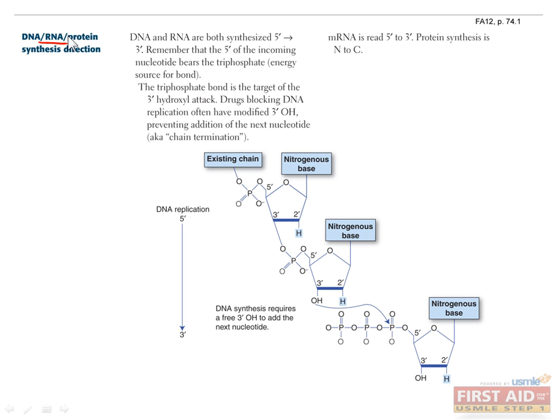DNA, RNA, and protein synthesis direction is not particularly high yield, but I'll go through the important parts. You should definitely know that both DNA and RNA synthesis proceed in a 5' to 3' direction, and that protein synthesis goes from N to C. It helps me to remember that 5 to 3 rhymes with N to C.